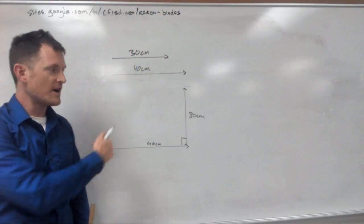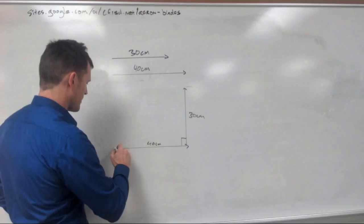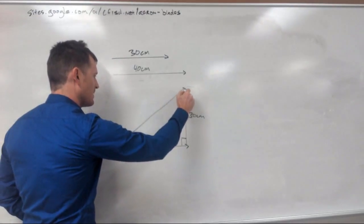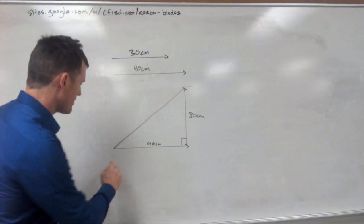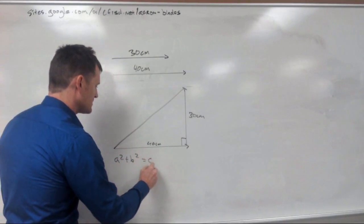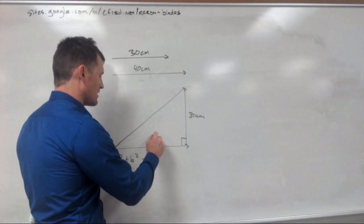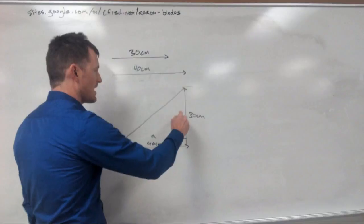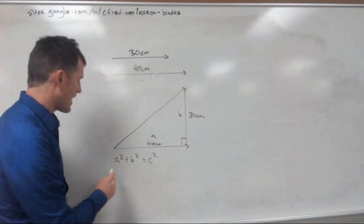Now, in order to find out the length of our resultant vector, the vector that goes from the tail to the head up here, we're going to use what you've probably already guessed by now, and we're going to use Pythagorean's theorem. A squared plus B squared equals C squared. In this case, we can say that A is our 40-centimeter side, and B is our 30-centimeter side.